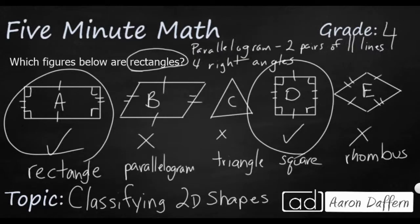And if we wanted to put names under each of these, this final shape, E, is a rhombus. So a rhombus is a parallelogram. It's got two pairs of parallel lines, and it's got four equal sides. So we could say that a square is both a rhombus and a rectangle.